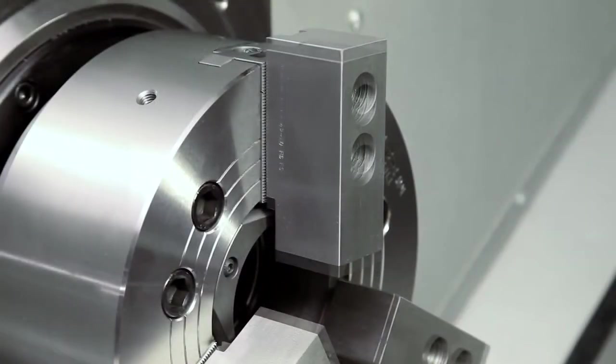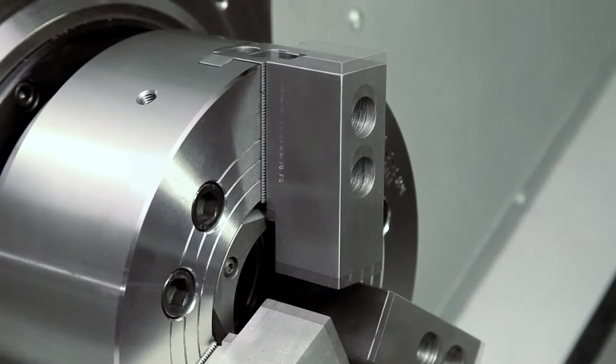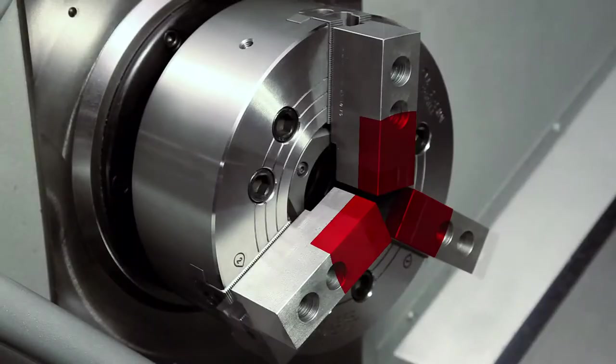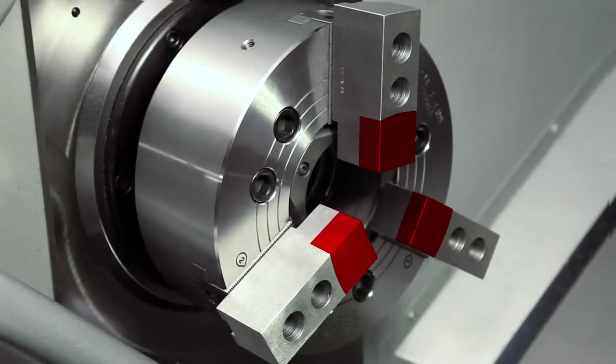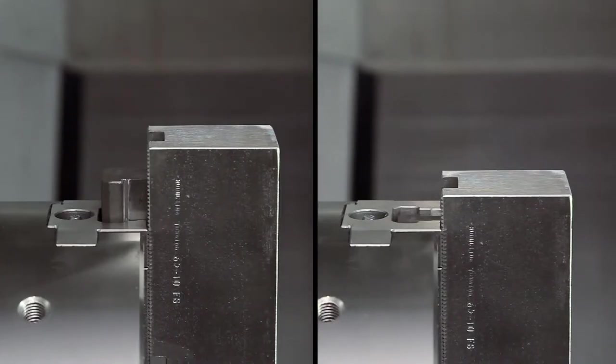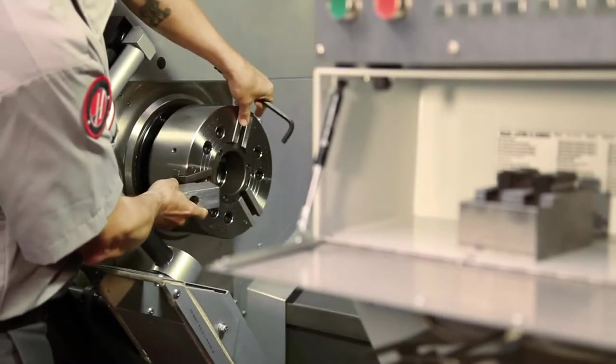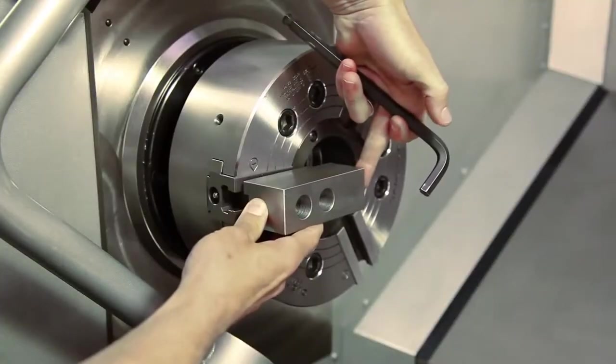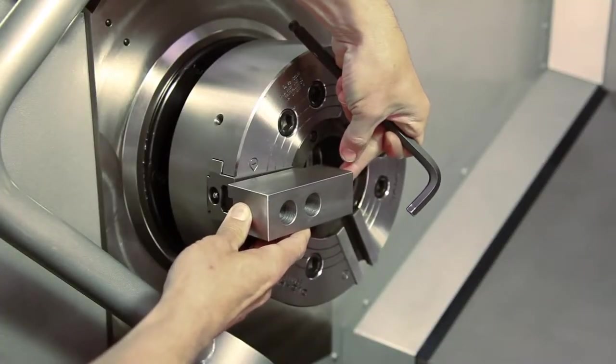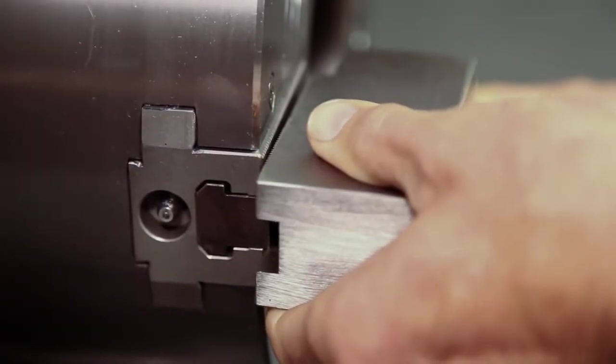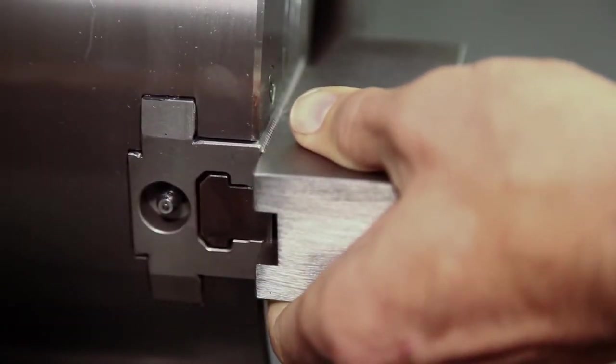You can mount your jaws in a variety of positions. But we chose this position in order to conserve our jaw thickness since we plan to reuse these in the future. Never position the jaw T-nuts outside of the edge of the chuck body. When first mounting the jaws, it's a good idea to set them out as far as possible, just as a starting point. Andrew positions the jaws outwards until the T-nuts are near the edge of the chuck body.